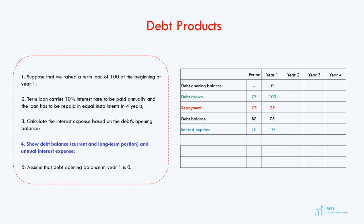The current portion of the long-term debt is the debt that has to be repaid within one year. Since the annual repayment is 25, the current portion of the long-term debt at the end of year 1 will be 25. The long-term debt will be 50, which is the difference between the total debt of 75 and the current portion of the long-term debt of 25.